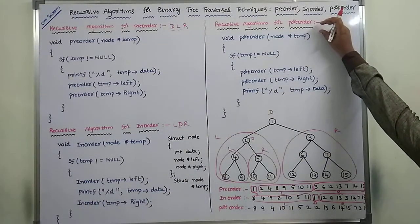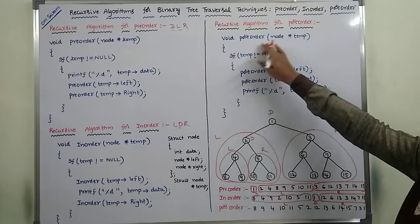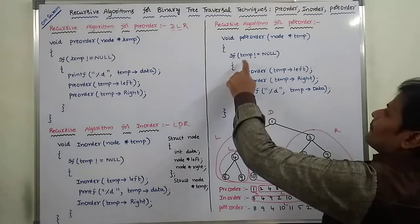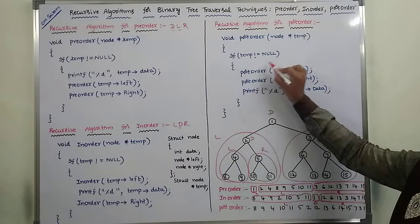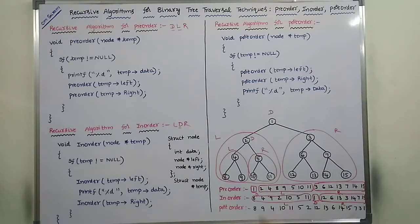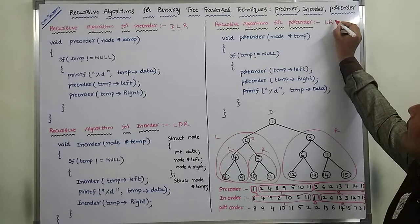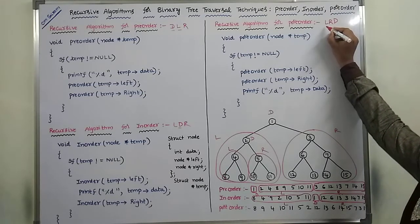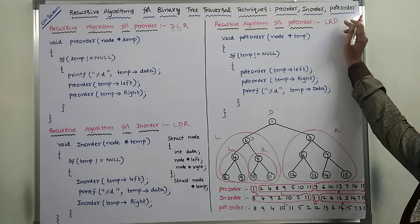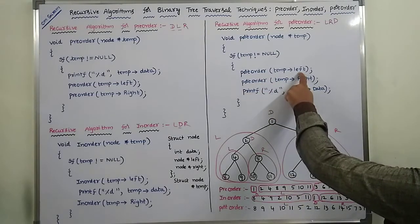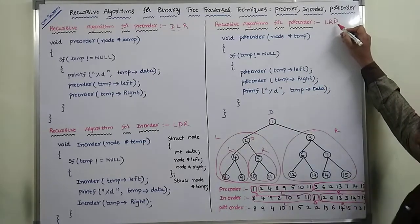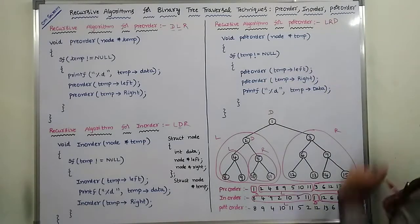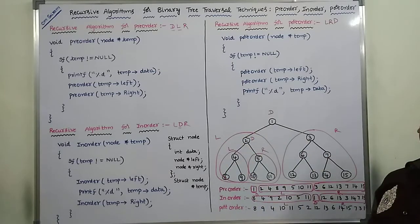Now go for the recursive algorithm for post-order. Void post-order(node pointer temp). If temp is not equal to null — root node is not null, it contains node 1, so the tree is not empty and the condition is true. Post-order means L, R, D: first visit the left sub-tree in post-order fashion, next visit the right sub-tree in post-order fashion, then visit the root node.